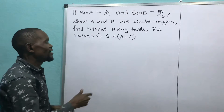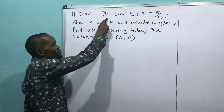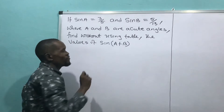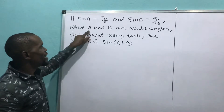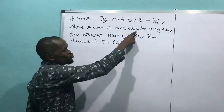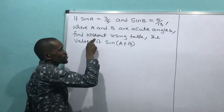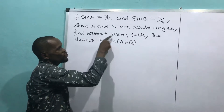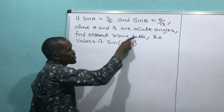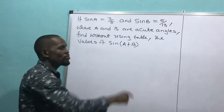If sin A equals 3 over 5 and sin B equals 5 over 13, where A and B are acute angles, find — without using tables — the value of sin(A + B).